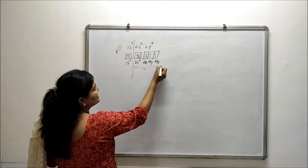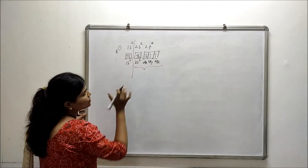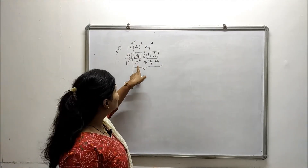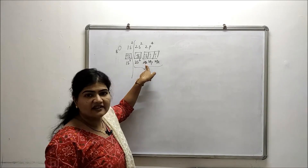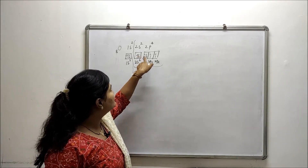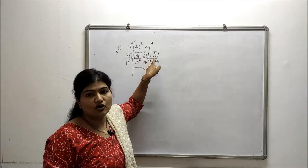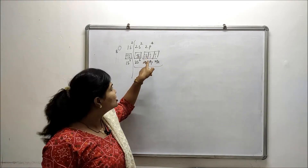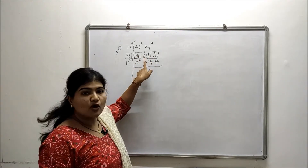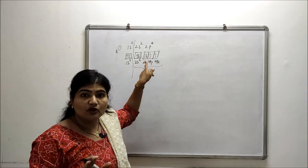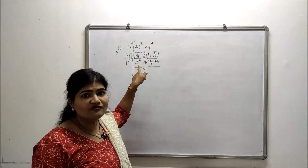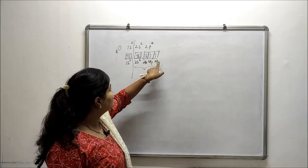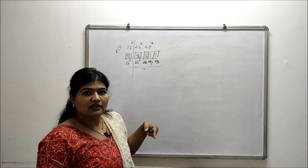Now focus on the outermost shell, which is the valence shell. In the valence shell you can see that 2s and 2px already have two completely filled orbitals — two electrons are already present in each. These two orbitals will not be contributing anything towards bond formation. Only the remaining half-filled orbitals are going to form bonds.